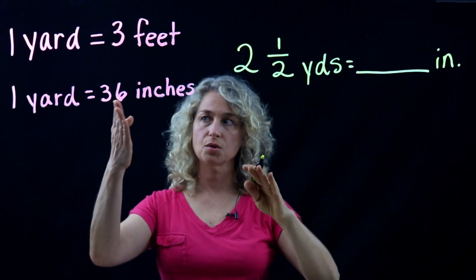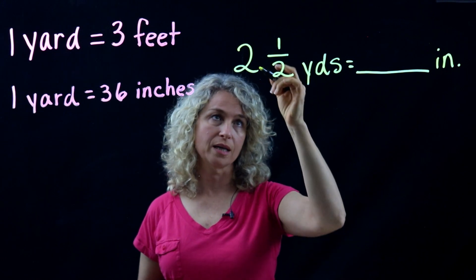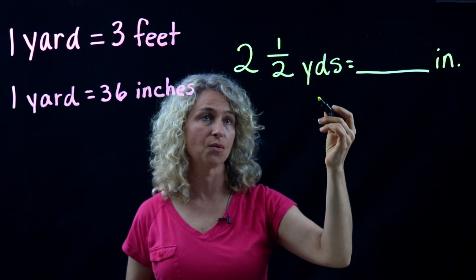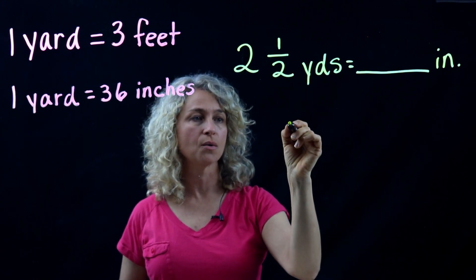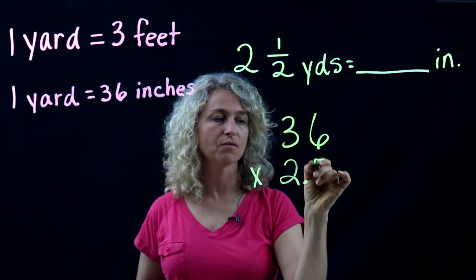Going yards to inches, we're going to multiply two and a half times 36. Now it's helpful to know that two and a half means two and five tenths, so 36 times 2.5.